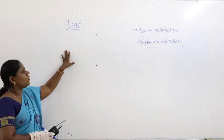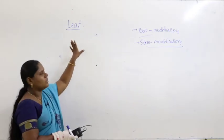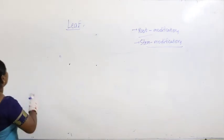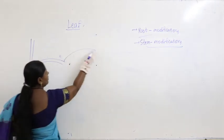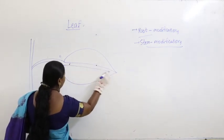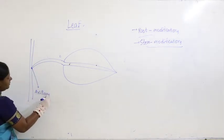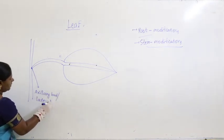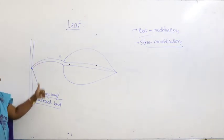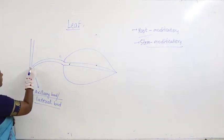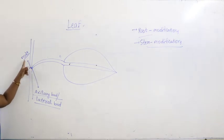Now let us study what is called a leaf. I have already given some basics about the leaf; now let us see the complete leaf part clearly. The place where leaf formation occurs is called the axillary bud or lateral bud. The place from where the leaf is produced is called a node.